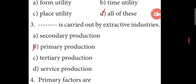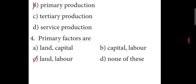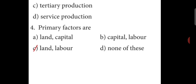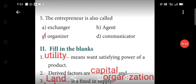Fourth question: Primary factors of production are — A. Land and Capital, B. Capital and Labour, C. Land and Labour, D. None of these. Answer: C. Land and Labour. Fifth question: The entrepreneur is also called — A. Exchanger, B. Agent, C. Organizer, D. Communicator. Answer: C. Organizer.